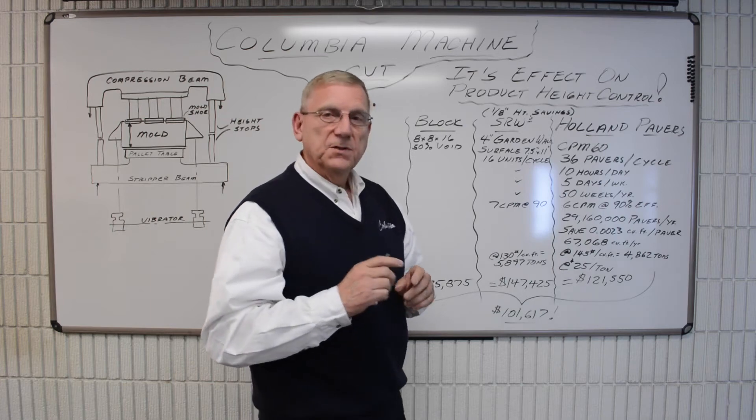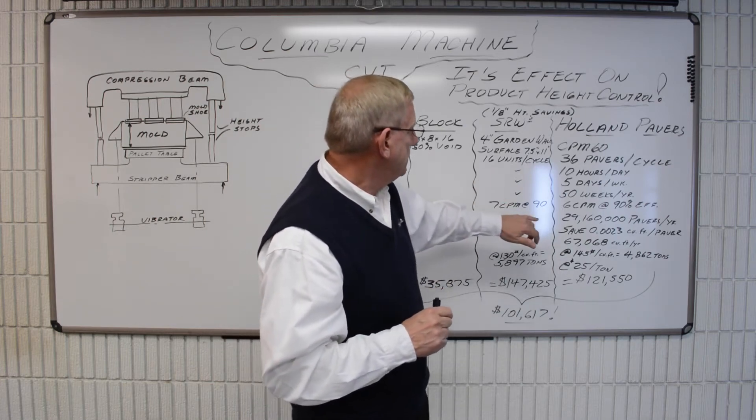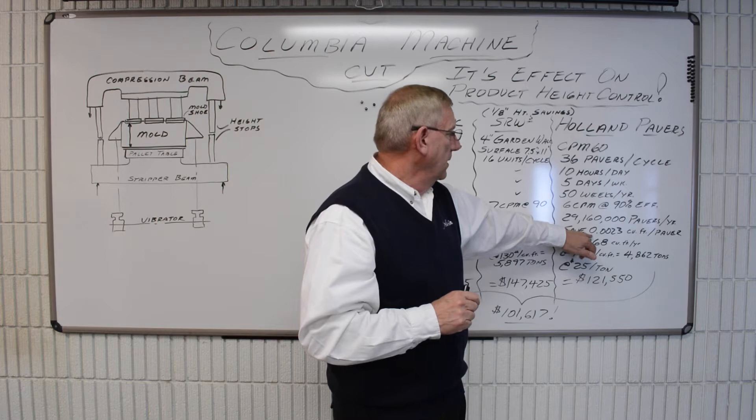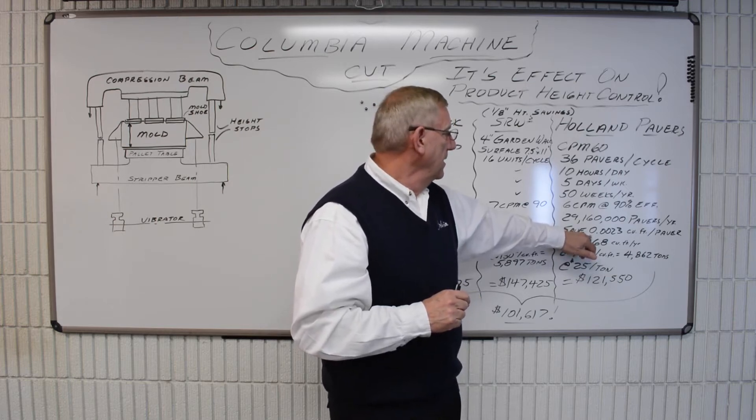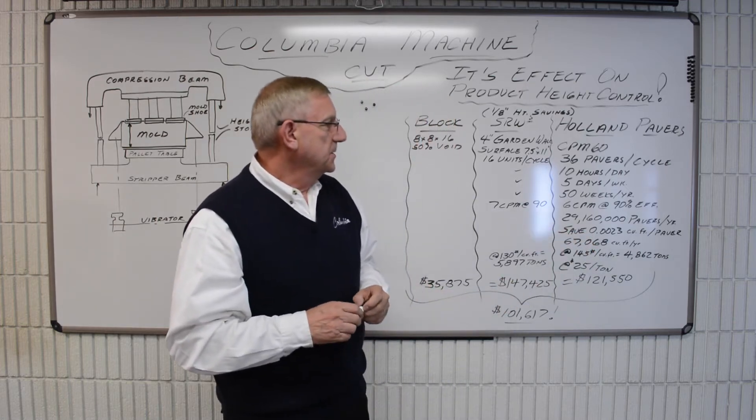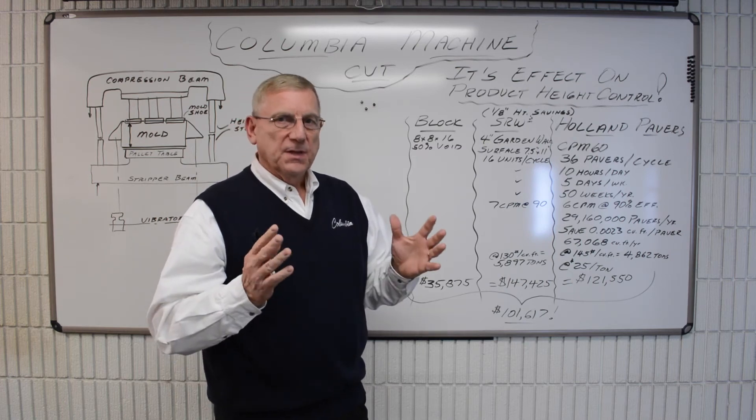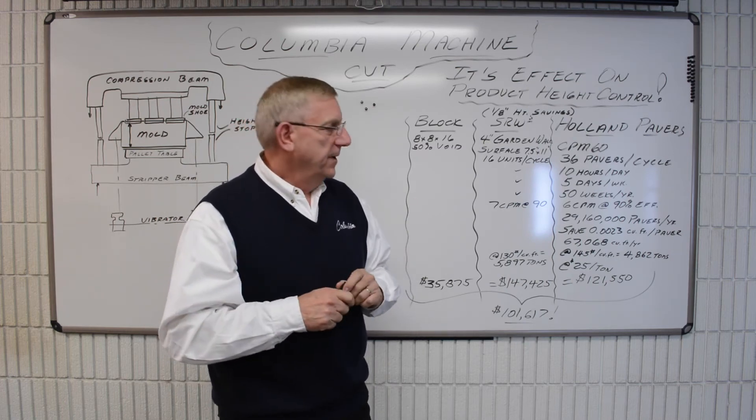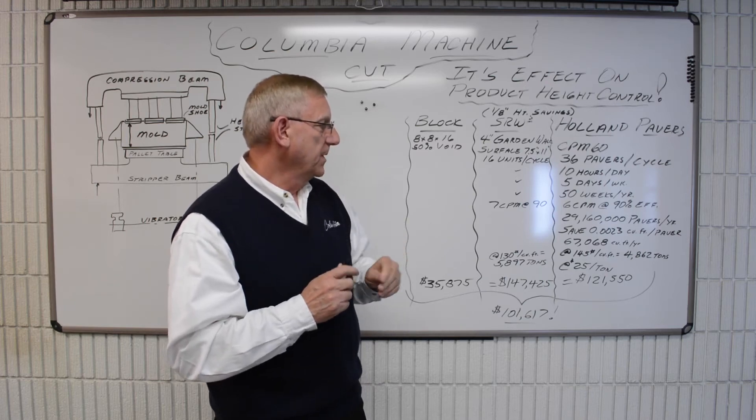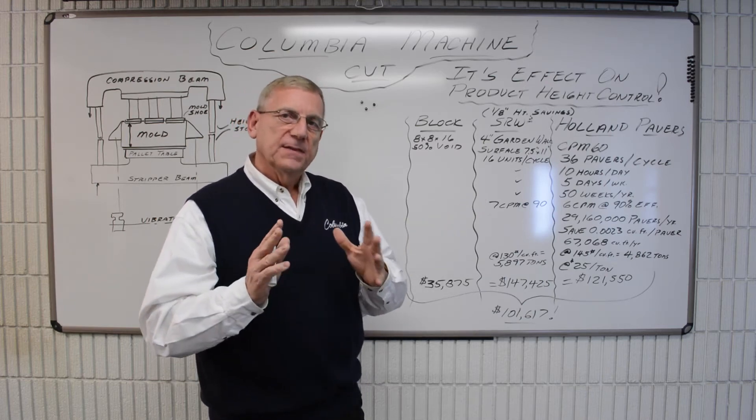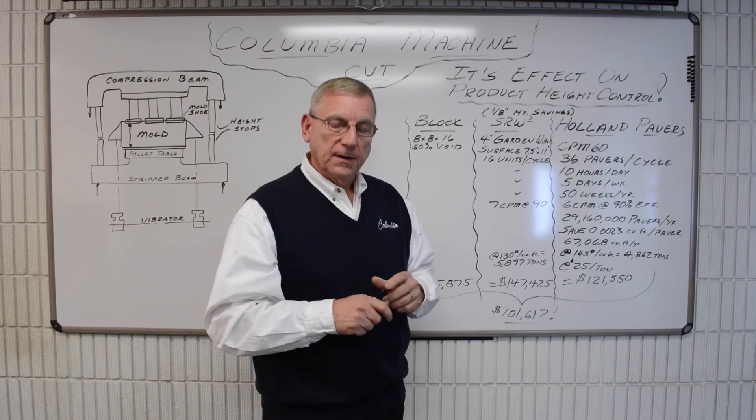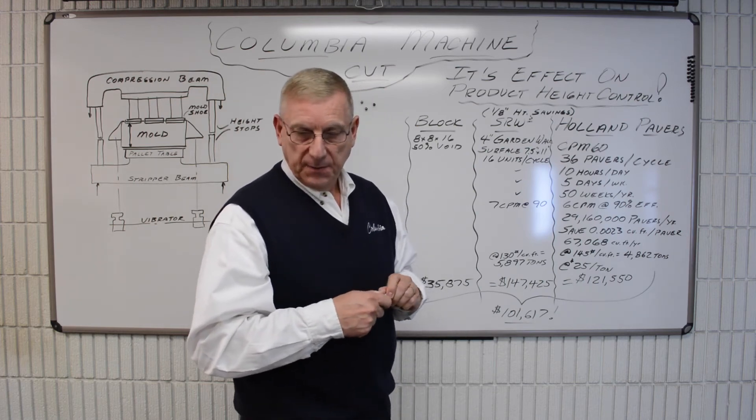So saving just 1/8 of an inch on a paver, on a regular Holland stone paver, saves 0.00233 cubic feet per paver. Now that seems like a ridiculously small amount, but what we're going to find is that that number is significant in a year's time because of the power of small numbers.